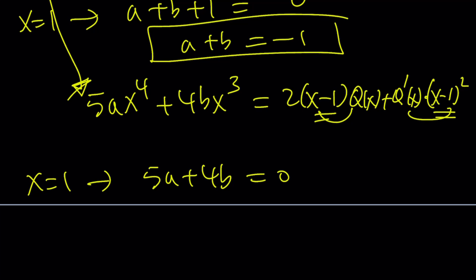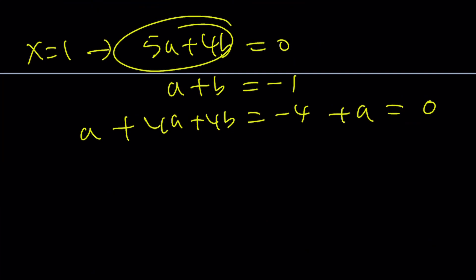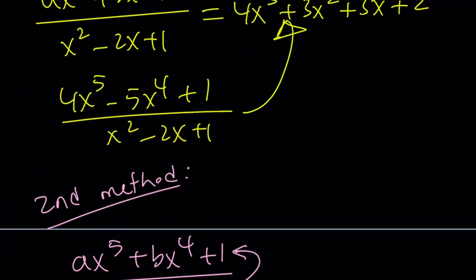a plus b is negative 1. How can I use this? Multiply this by 4. 4a plus 4b is negative 4. But 5a plus 4b is just one more a. Add to both sides. Set it equal to 0. a is equal to 4. b is equal to negative 5. And guess what? That gives you the exact same answer that we got before.